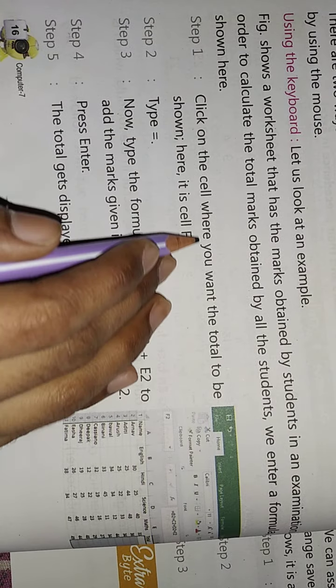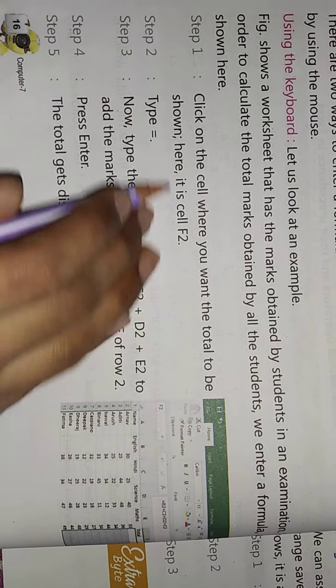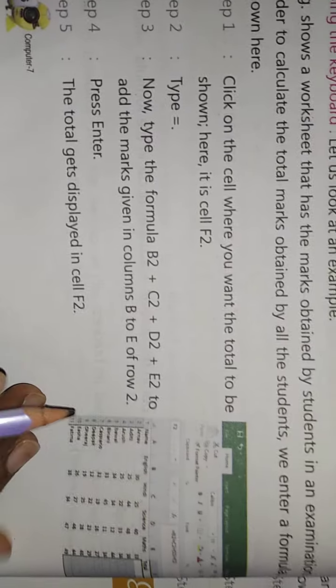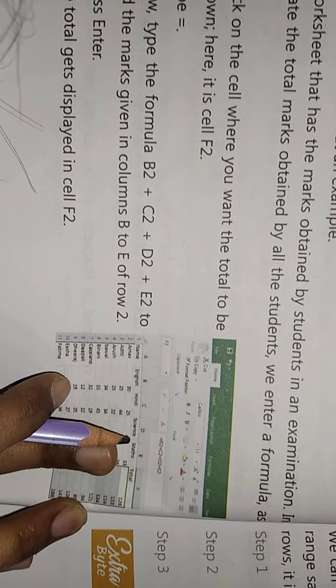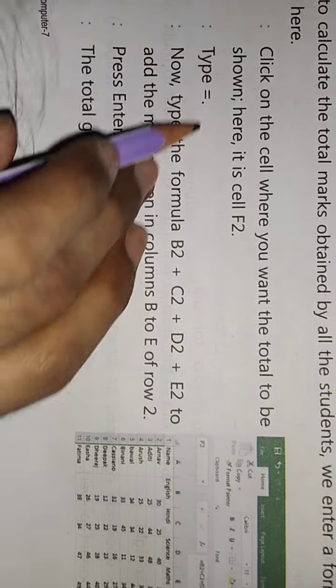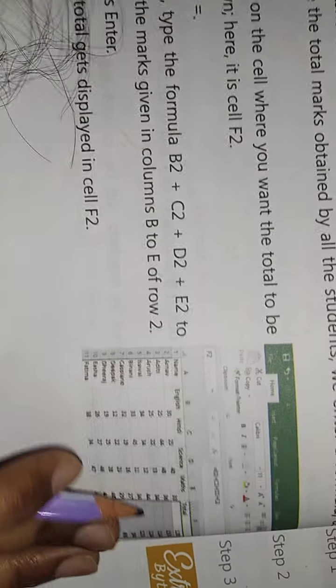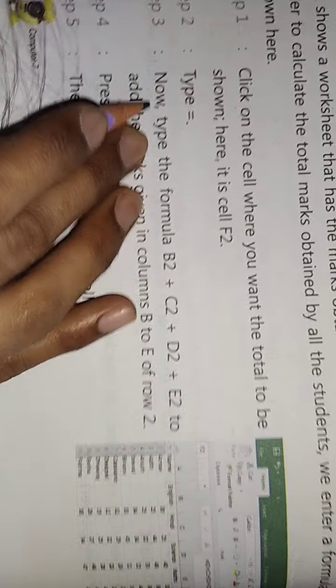First of all, click on the cell where you want the total to be shown. Here it is cell F2. Now type. We will type there the equals sign. Now type the formula.